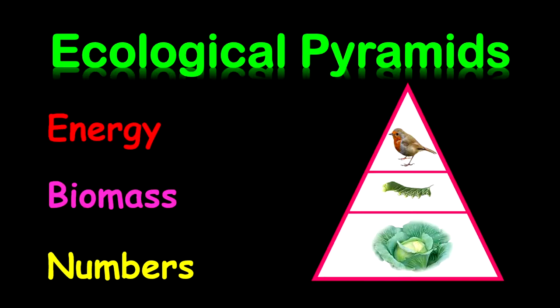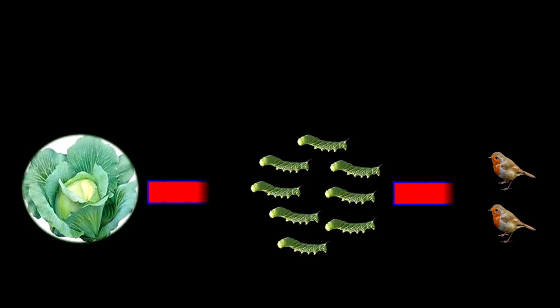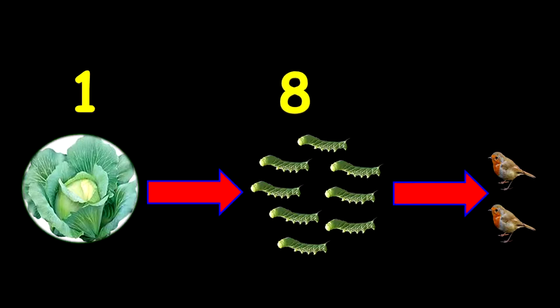Before I get into the examples of these pyramids, I want to look at an example of a food chain. This sample food chain only involves three types of organisms or three trophic levels. Our producer will be only one for this example. We're going to use eight caterpillars and two birds. Remember these numbers because I'm going to refer to them later in the lesson.